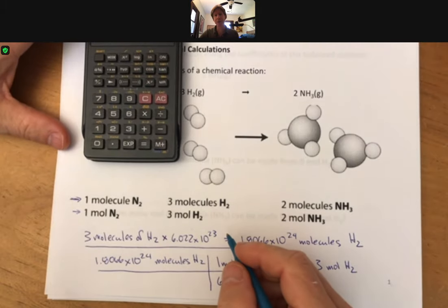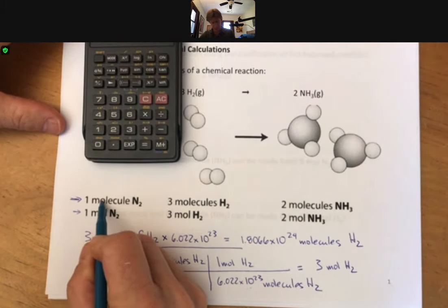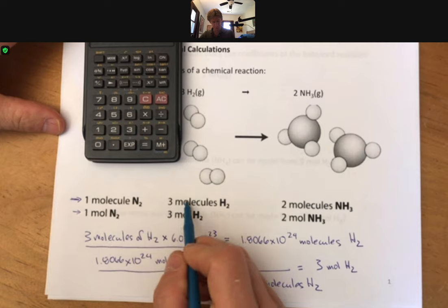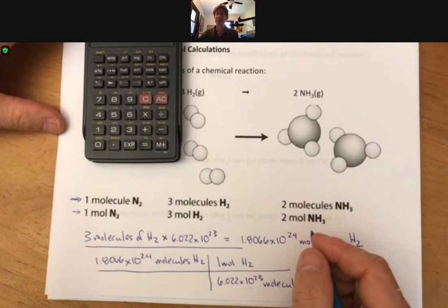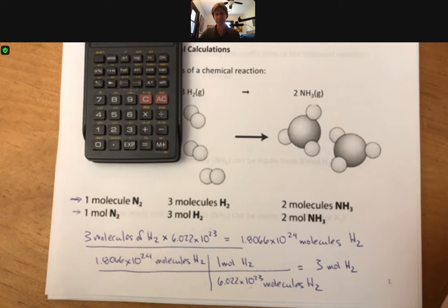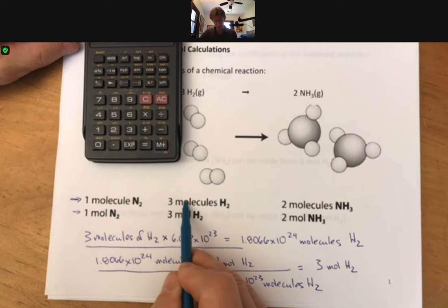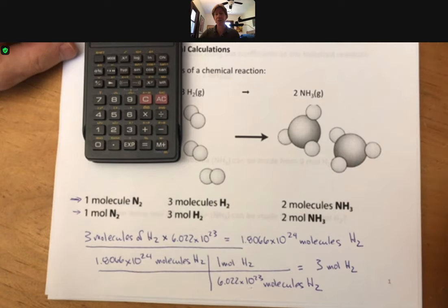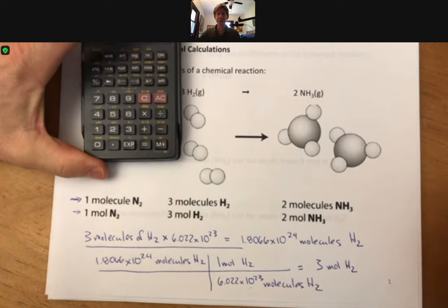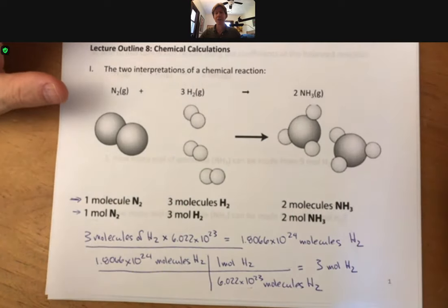And the point I'm trying to make is that if you take the molecular or the atomic interpretation of a chemical reaction and you multiply all of the terms times Avogadro's number and convert into moles, you get the mole interpretation. So they are totally equivalent. One just deals in moles. So basically you take the molecular interpretation and you multiply it times Avogadro's number to get the mole interpretation. Entirely equivalent. Now this lecture outline, this module, we're going to be using the mole interpretation exclusively. And so let's get comfortable with moles.